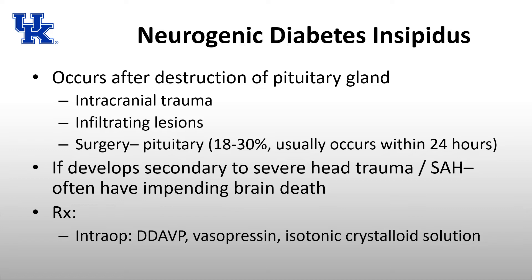Neurogenic diabetes insipidus is a problem with either not making or not secreting enough vasopressin. This can occur after destruction of the pituitary gland due to intracranial trauma, infiltrating lesions, or specifically pituitary surgery. In about 18% to 30% of pituitary surgeries, patients go on to develop neurogenic diabetes insipidus, usually within 24 hours — not always in the OR but within the first 24 hours. It can last a few days or up to six months but usually resolves if it's due to pituitary surgery.